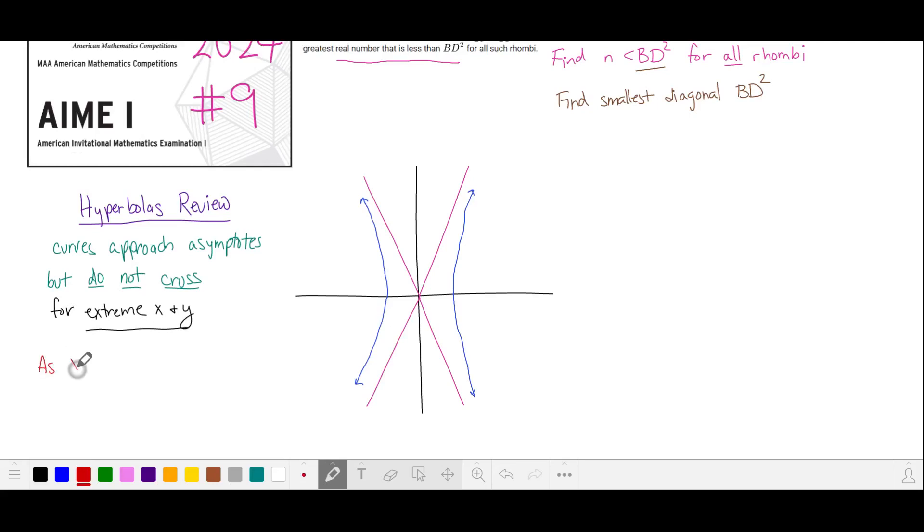So as x and y approach plus or minus infinity, our hyperbola starts to look more and more like the lines that are the asymptotes. We can see that in the equation for the hyperbola. We'll first multiply both sides by 120 to get rid of the denominators, and then we'll isolate 5y squared. With this equation,